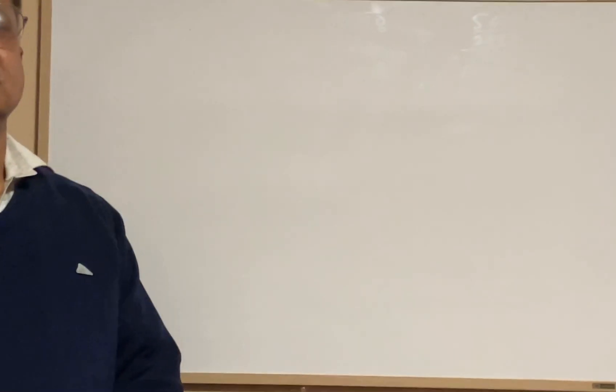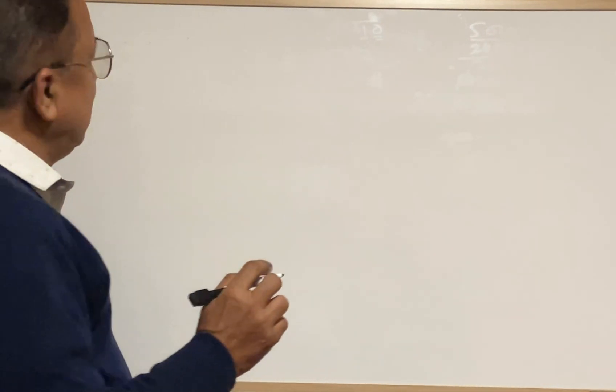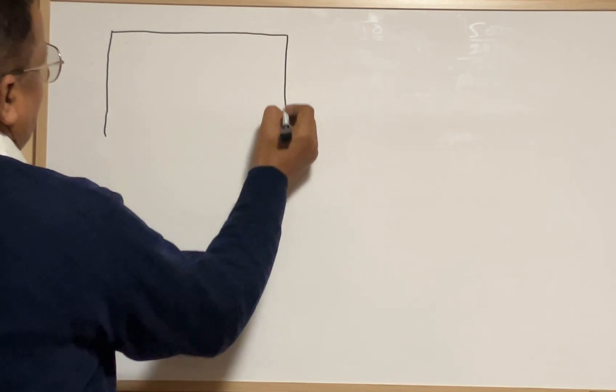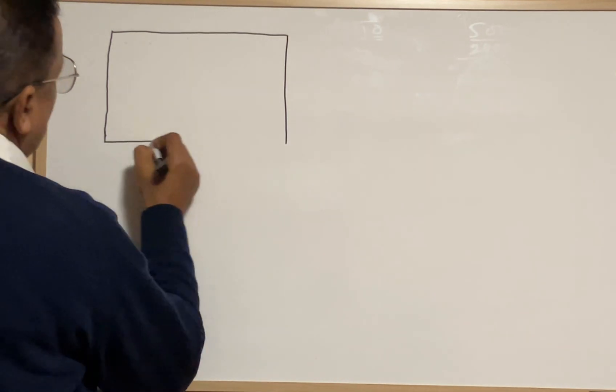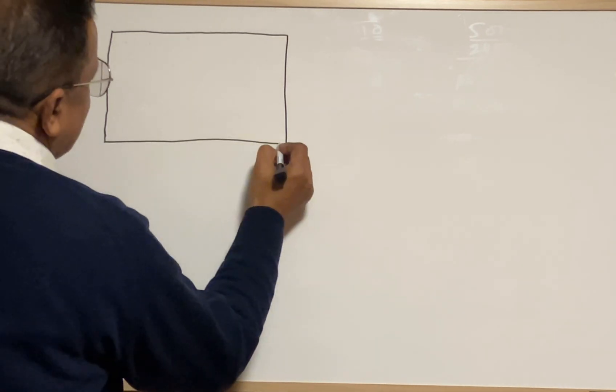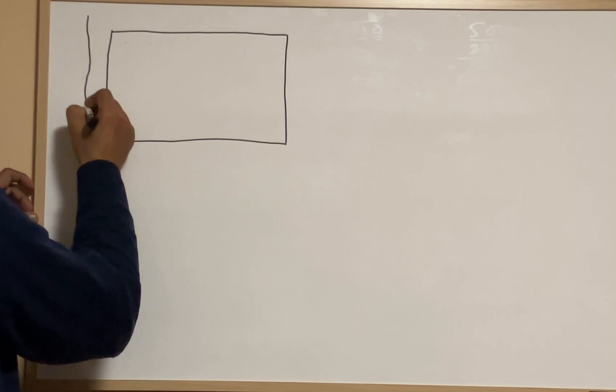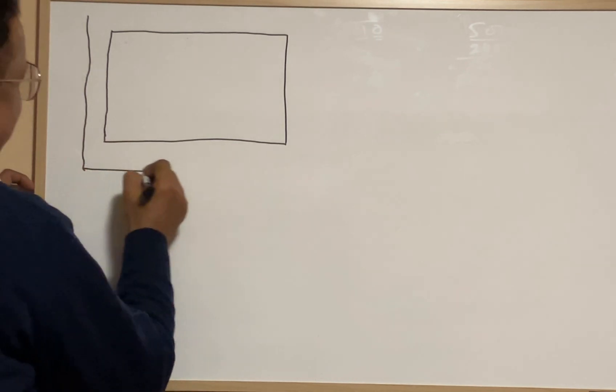Welcome students. Today we are going to discuss the outer part of rectangular figures. The outer part means whatever lies outside the rectangular figure.